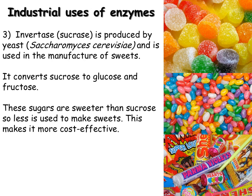Our third use of enzymes is in the production of sweets. Invertase, also known as sucrase, is produced by a yeast called Saccharomyces cerevisiae and is used to produce sweets. Invertase converts sucrose into glucose and fructose. Both glucose and fructose are much sweeter than sucrose, so you don't need as much sugar to make the sweets taste nice. This makes it more cost effective, and because less sucrose is needed for the required sweetness, these sweets are also much lower calorie than those made purely from sucrose.